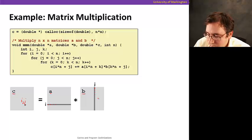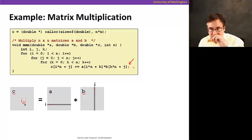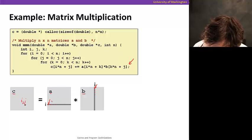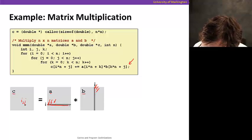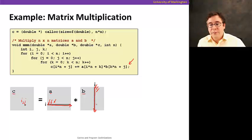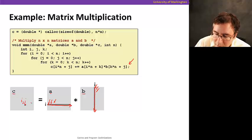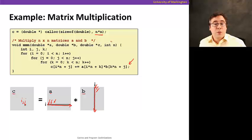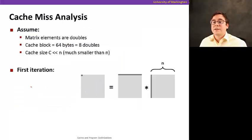This loop is reading an entire row of A and an entire column of B just to produce a single element in C. This is an n-by-n matrix, so we're going to do n-squared of these operations. Especially if the matrix is big, this could be a lot of operations.